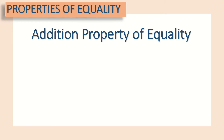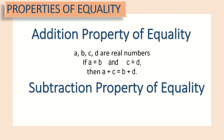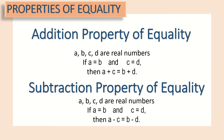Let's get started with the different properties of equality. First, the addition property of equality states that for real numbers a, b, c, and d, if a = b and c = d, then a + c = b + d. Next, the subtraction property of equality states that if a = b and c = d, then a − c = b − d.